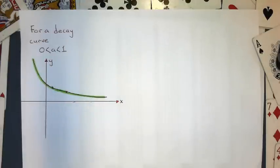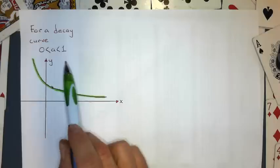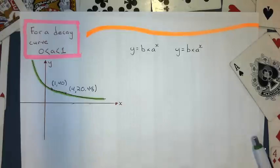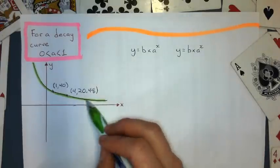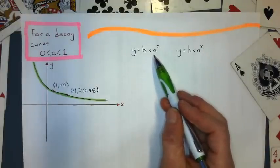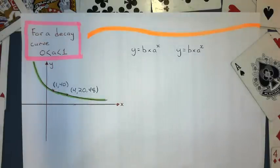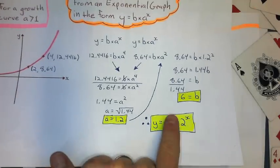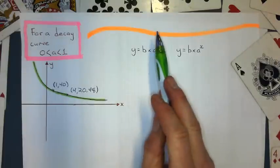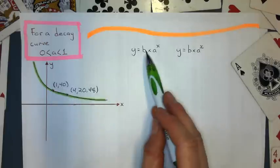So a decay curve means that my base of the power is going to be between 0 and 1. Before I start this one, you've got to remember, if it's a decay curve, then this base of the power is going to be a fraction or a decimal between 0 and 1. It's not going to be a number greater than 1 like our previous one was. It was 1.2. So this guy is going to be smaller than 1.2. Do the same steps.